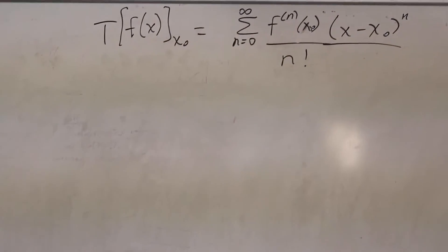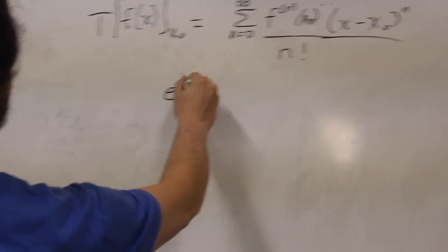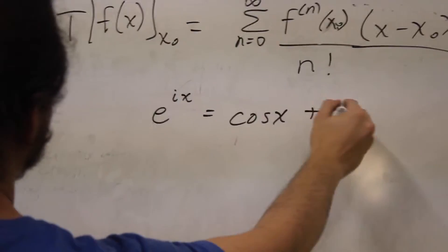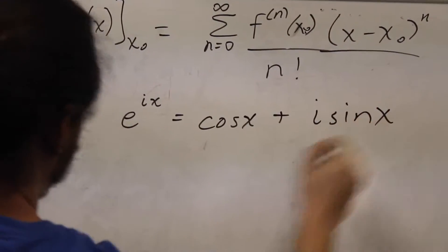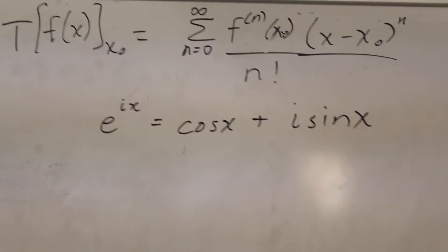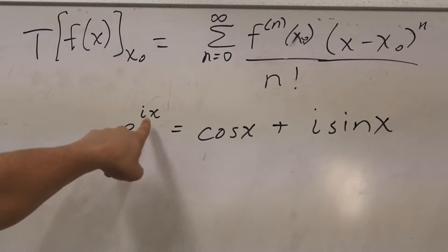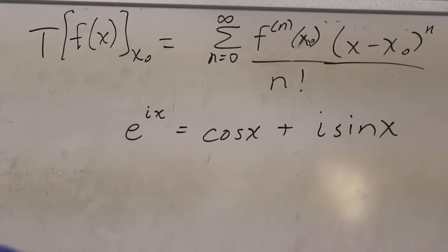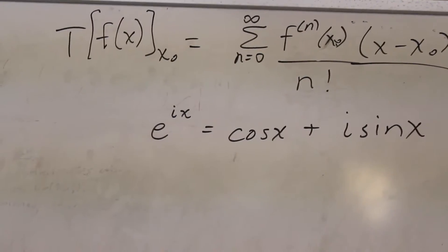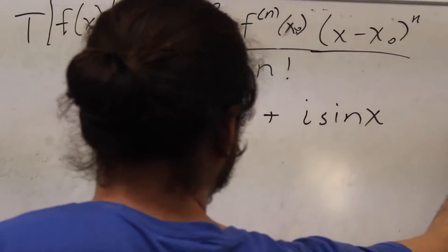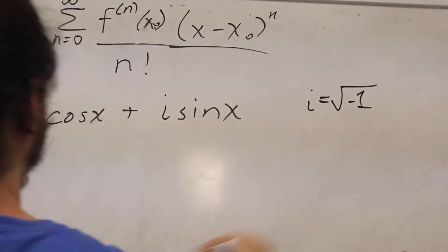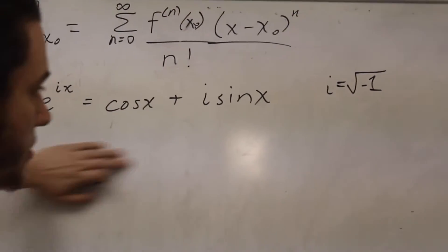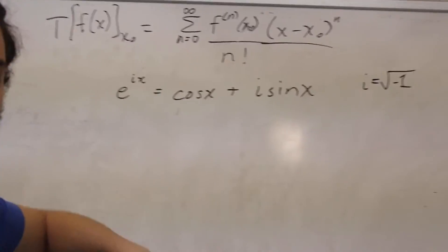Now we're going to derive Euler's formula, which looks like this. It says that the exponential e to the ix is equal to cosine x plus i sine x. Remember, i is the so-called imaginary number, the square root of negative one. And so this is an equality that we can show from Taylor series.